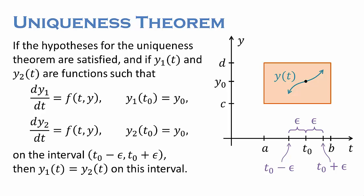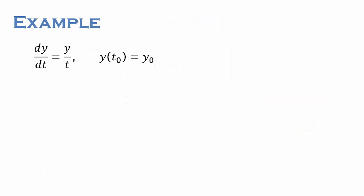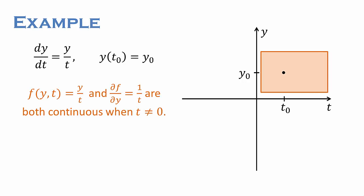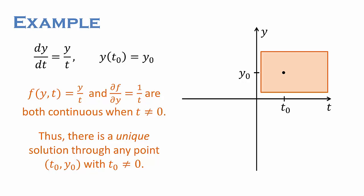Since the conditions for the uniqueness theorem are stronger than those for the existence theorem, the two theorems are often combined and stated as one existence and uniqueness theorem. Returning to our example dy/dt = y/t, we said earlier that a solution exists through any point (t0, y0) with t0 ≠ 0. Since f(t, y) = y/t and its partial derivative with respect to y, which is 1/t, are both continuous in a rectangle containing this point, the uniqueness theorem tells us that the solution through this point is unique. However, as before, the theorem doesn't tell us what happens at points where t = 0.